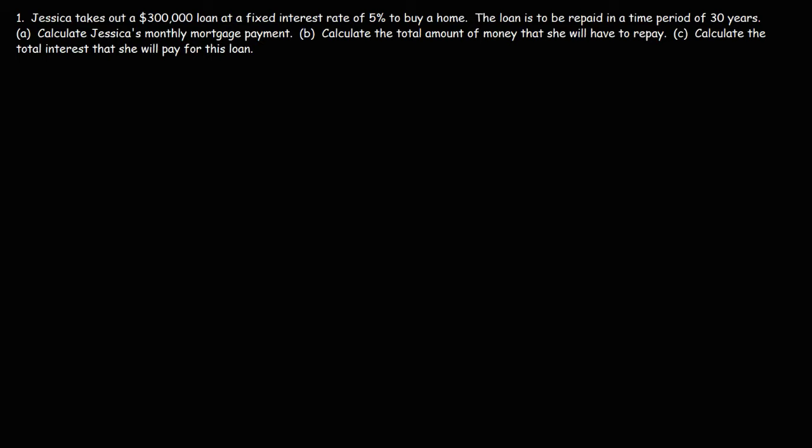In this video, we're going to talk about how to calculate the monthly payment of a mortgage. So in this example problem, Jessica takes out a $300,000 loan at a fixed interest rate of 5% to buy a home. The loan is to be repaid in a time period of 30 years. Part A, calculate Jessica's monthly mortgage payment.